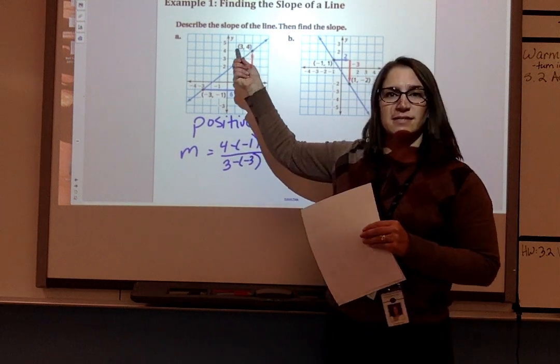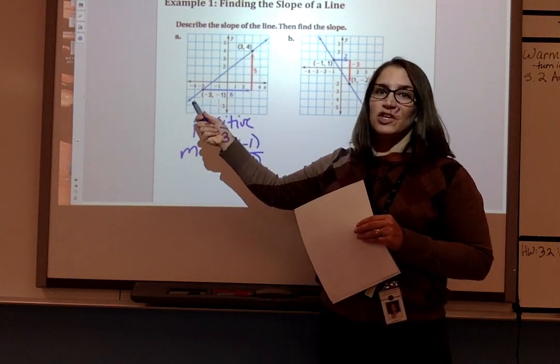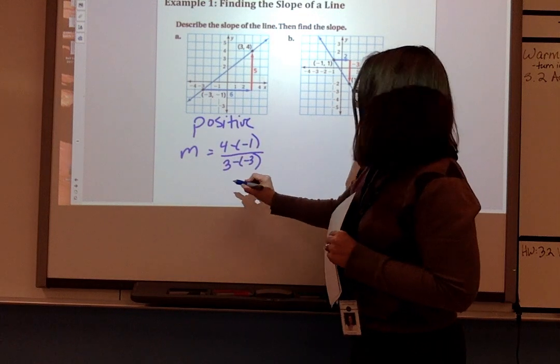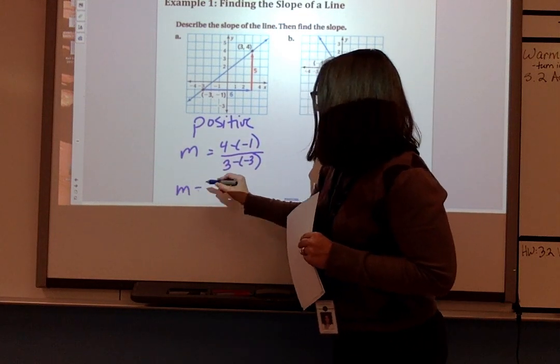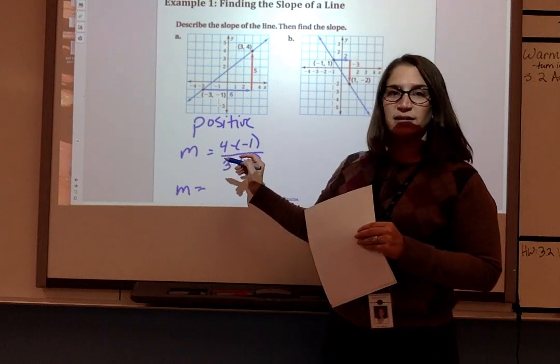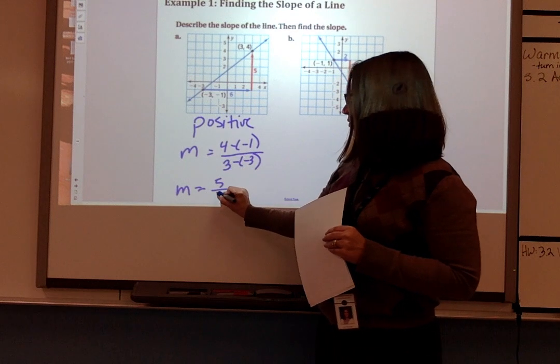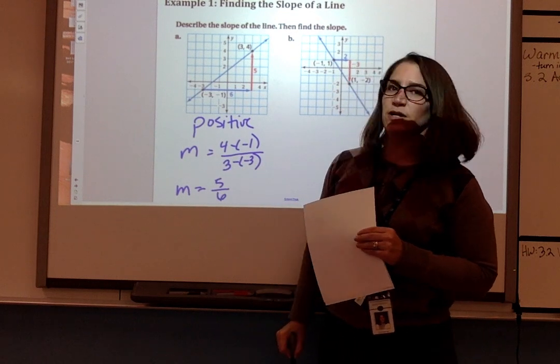Now I chose to make this point 2 and this point 1. You could go the other direction, you're going to get exactly the same thing. So our slope here is going to be 4 minus negative 1, which is 4 plus 1 or 5, over 3 minus negative 3, which is 3 plus 3 or 6.